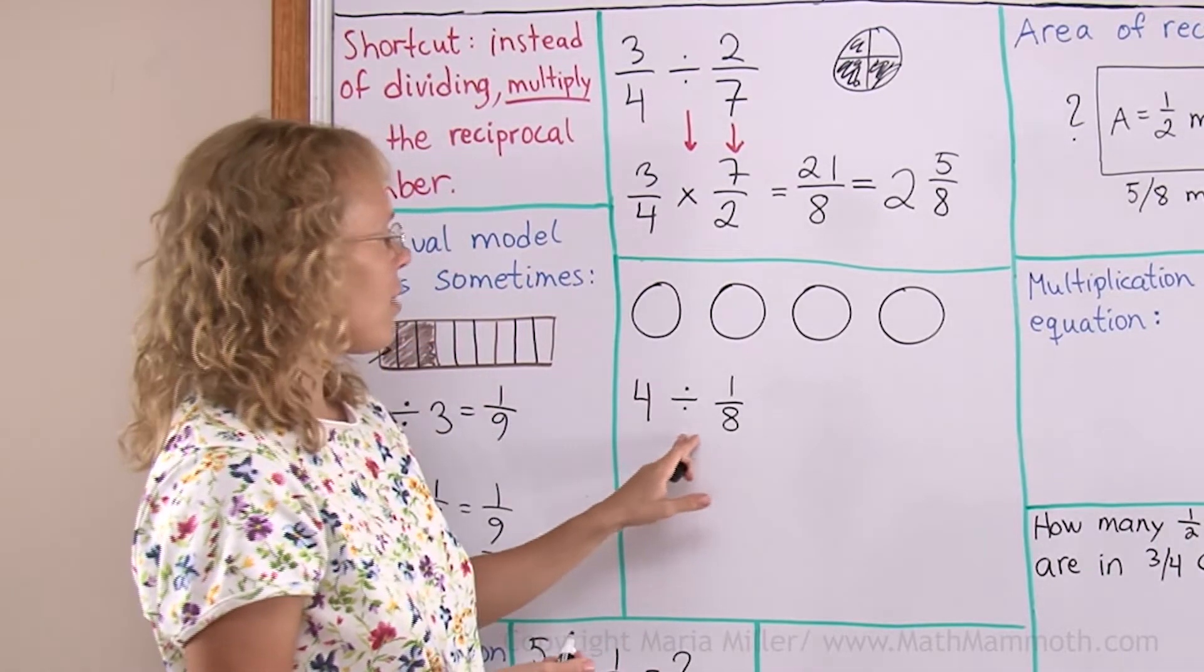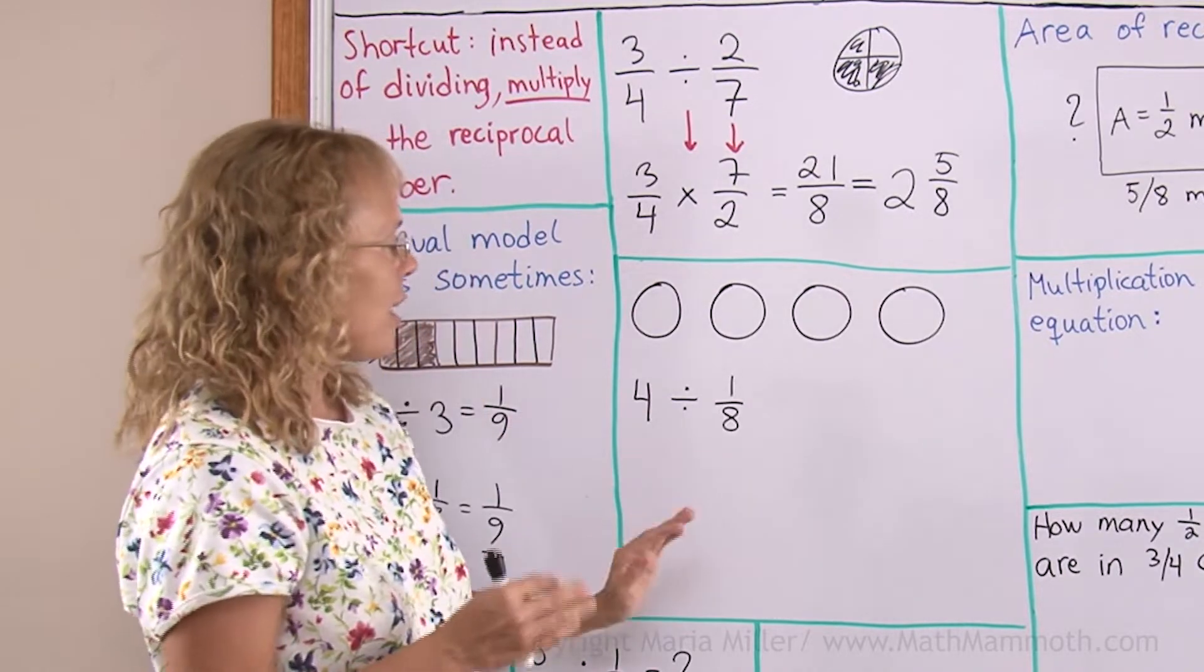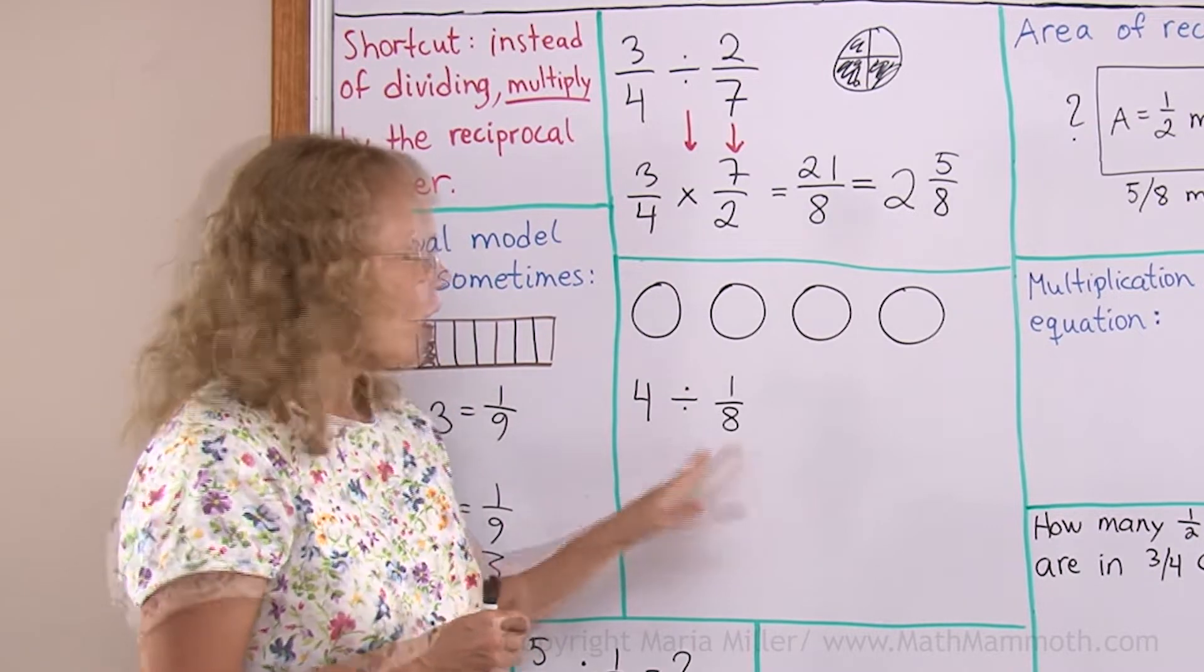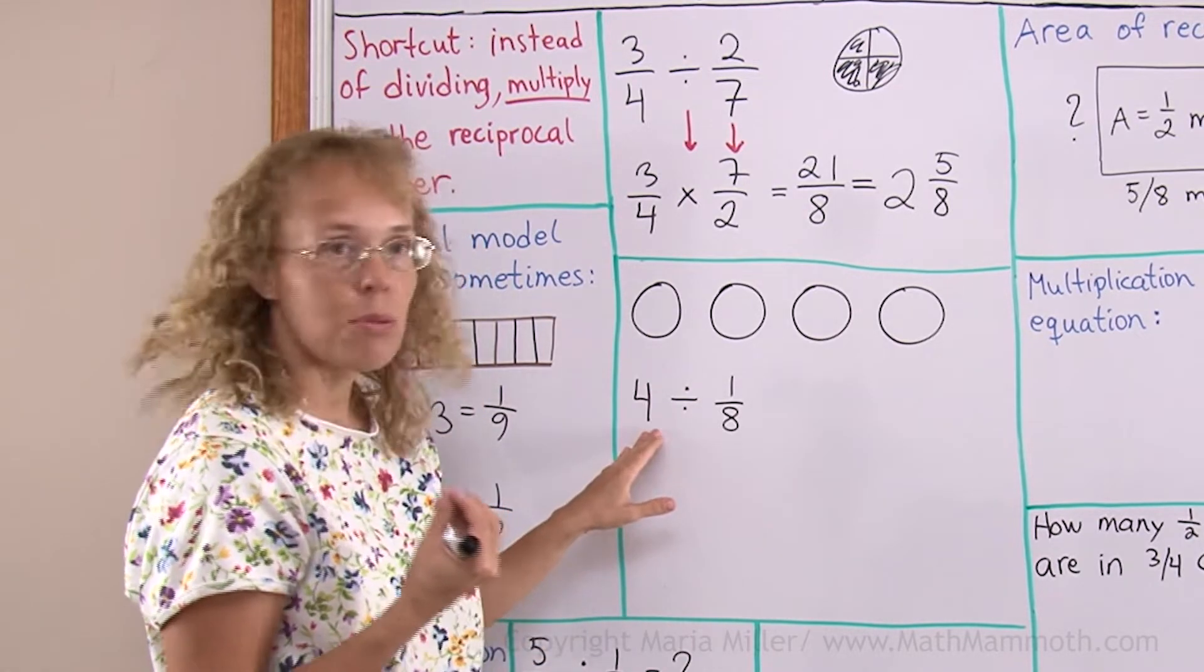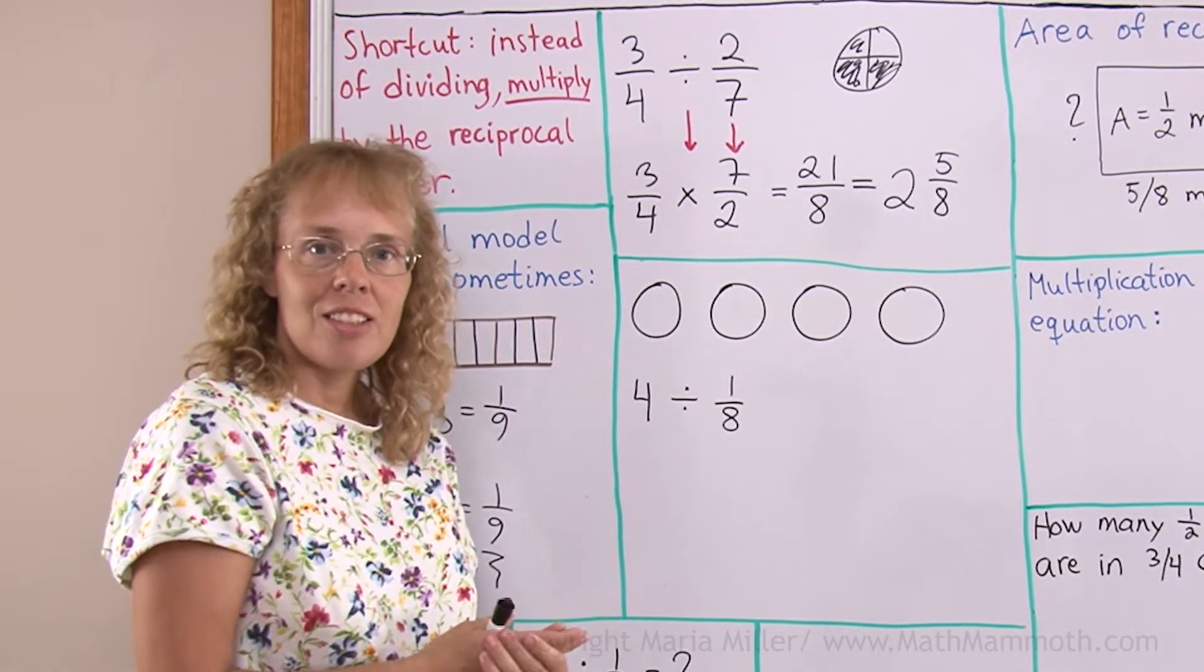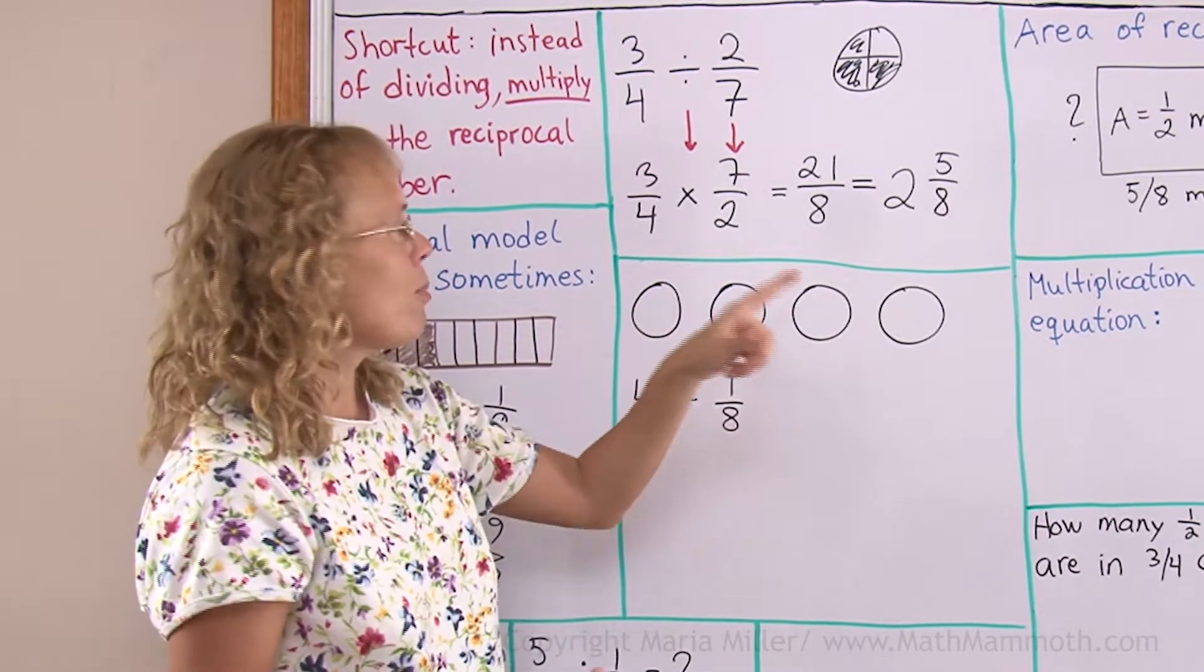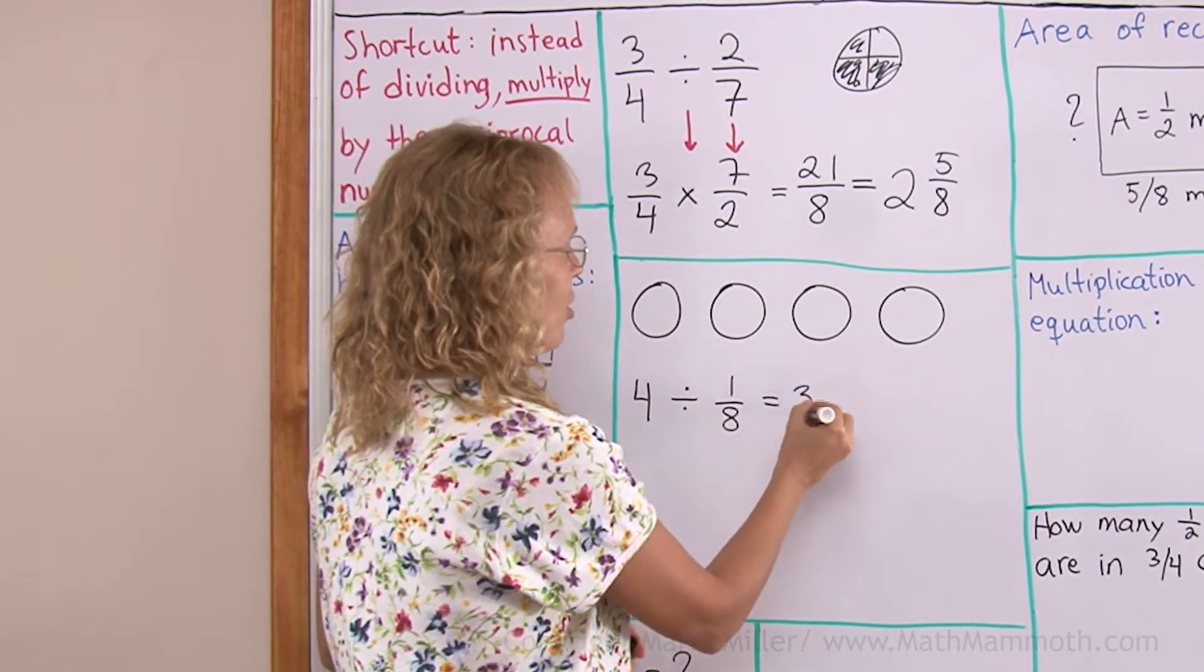Here, I have 4 divided by 1/8. Think of it this way: How many times does 1/8 fit into 4? How many eighths are there in 4 full pies? And that's very easy to think about. You know, in 1 pie you would have 8 eighths, and so in 4 pies you will have 32, right? So this is 32. That's the answer.